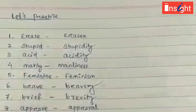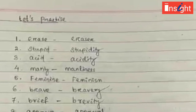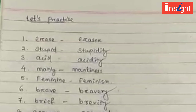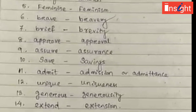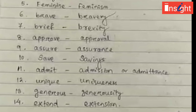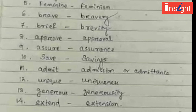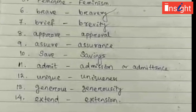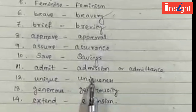On page 11 in the Let's Practice section, write the abstract forms of the given words in your book and copy. Examples: erase → eraser, stupid → stupidity, acid → acidity, manly → manliness, feminine → feminism, brave → bravery, gravity, approve → approval, assure → assurance, save → savings, admit → admission or admittance, unique → uniqueness, generous → generosity, extend → extension.